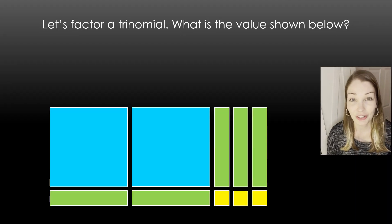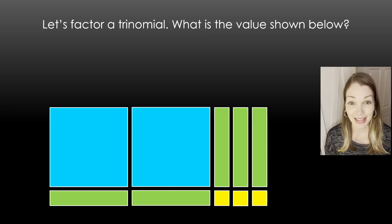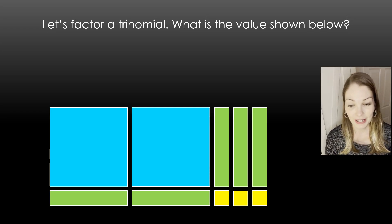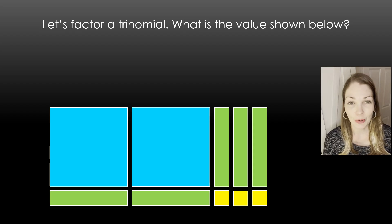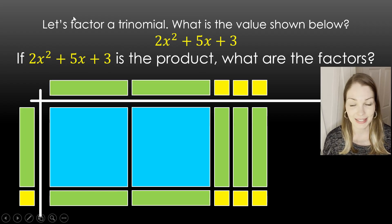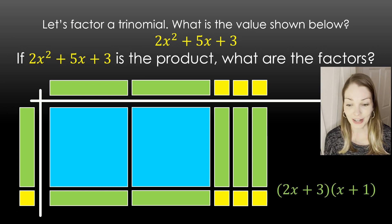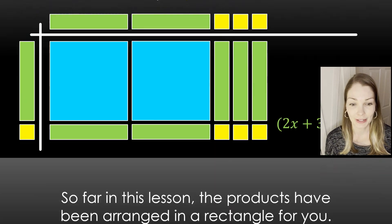Now let's try to factor a trinomial. First we'll look at this and try to determine the value. We have 2x squared plus 5x plus 3, and now we're just trying to figure out the dimensions. We can line up our algebra tiles to see that they give us that area. The two factors are 2x plus 3 and x plus 1.